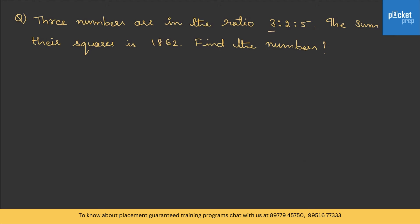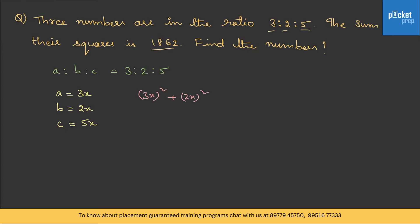Three numbers are in the ratio 3:2:5 and the sum of their squares is 1862. Find the numbers. Let's assume a = 3x, b = 2x, and c = 5x. They said the sum of their squares is 1862, so (3x)² + (2x)² + (5x)² = 1862, which is 9x² + 4x² + 25x².